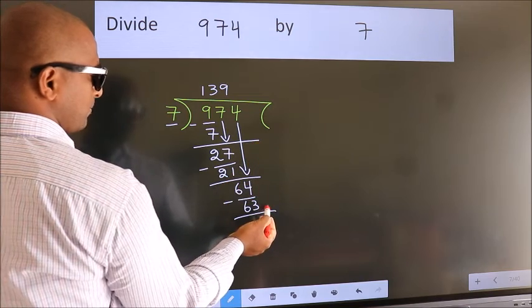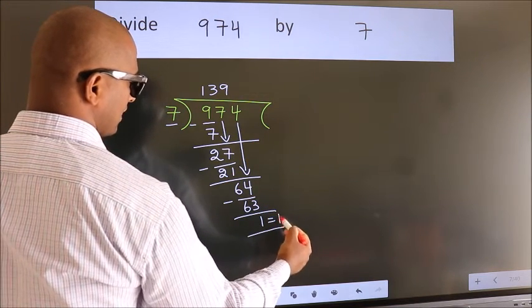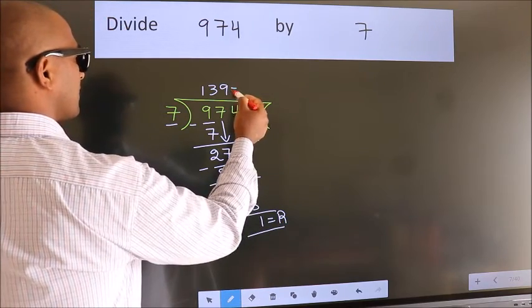No more numbers to bring it down. So, we stop here. This is our remainder. This is our quotient.